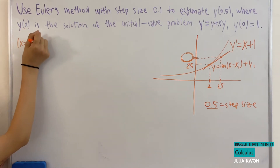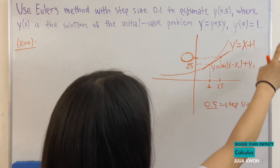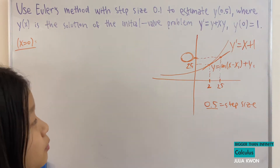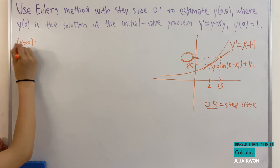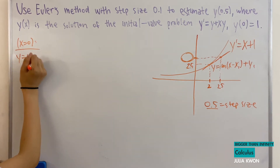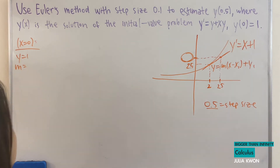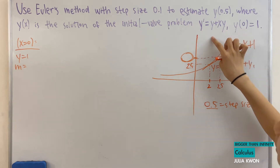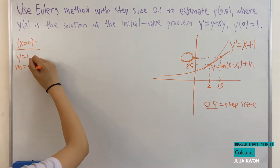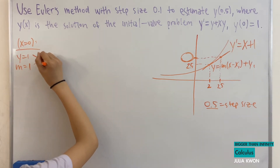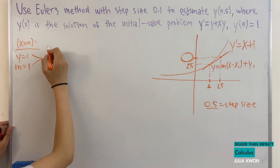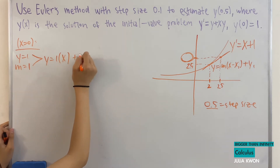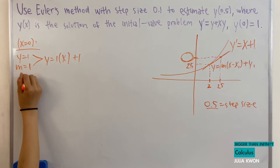Now let's get to the actual problem. We start at x = 0, because that's what we know, and we're trying to estimate the y value at x = 0.5. At x = 0, the y value is 1, and the slope — using y' = y + x·y — gives slope = 1 + 0·1 = 1. Using these, the tangent line at x = 0 is y = 1·(x − 0) + 1, so y = x + 1.